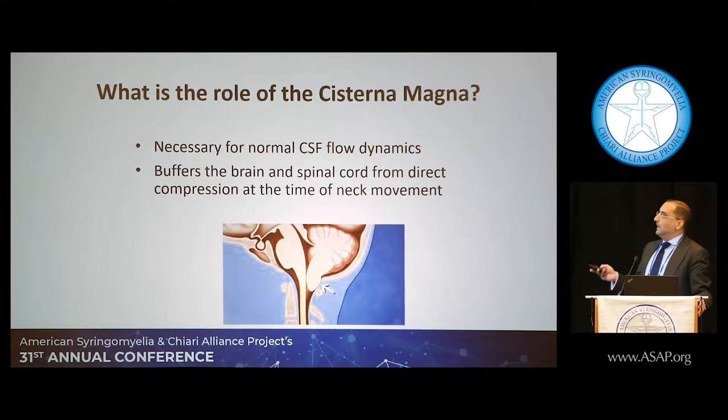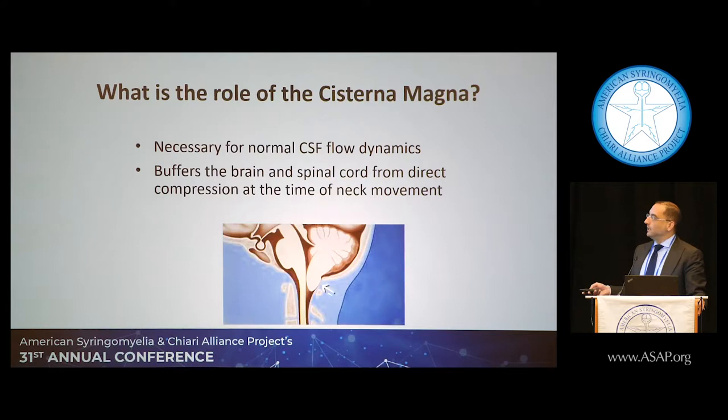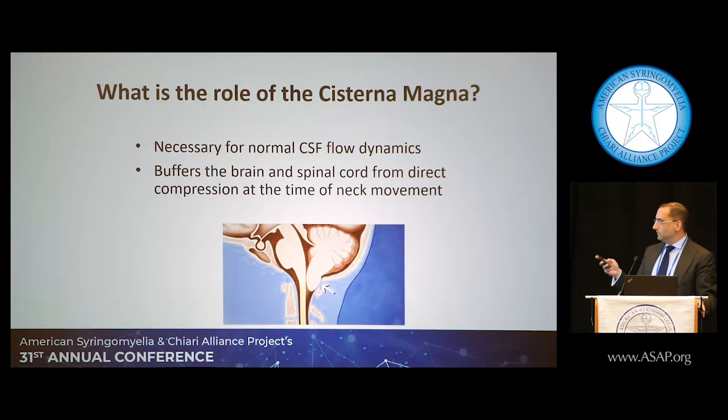In a Chiari malformation, that large fluid-filled space — the cisterna magna — is gone because there's tissue hanging down into it. That space normally buffers our neck movements; the brain and spinal cord float in spinal fluid and have a cushion there. When you lose that cushion, that's where all the mayhem starts.